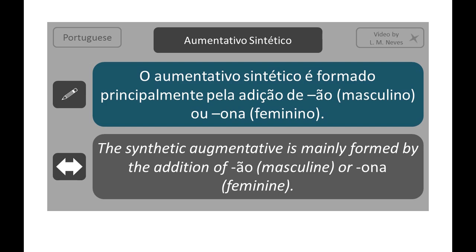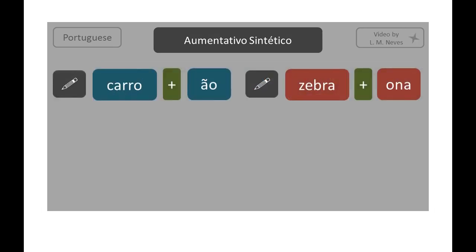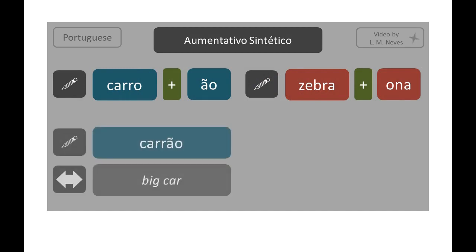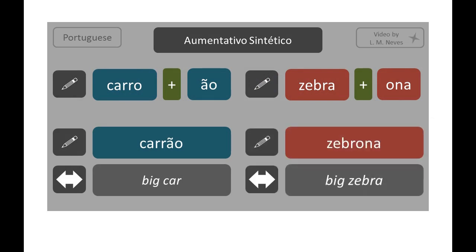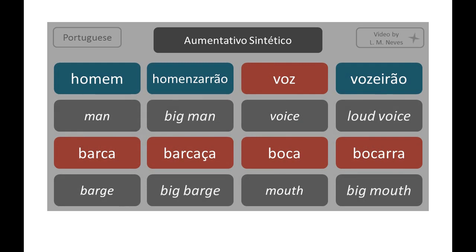Now let's see the augmentative. The augmentativo sintético is mainly formed by the addition of -ão (masculine) or -ona (feminine). For example: carro + ão = carrão; zebra + ona = zebrona.